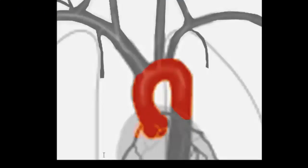The thoracic aorta begins after the aortic valve and its first branches are the right coronary artery, which we'll pick out here, and the left coronary artery, which we'll pick out here, entering the heart.